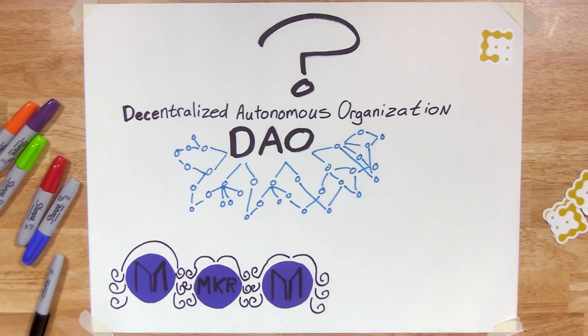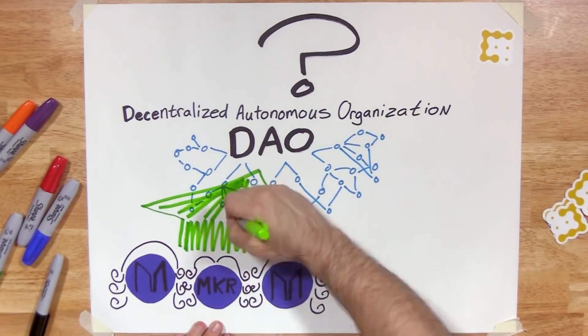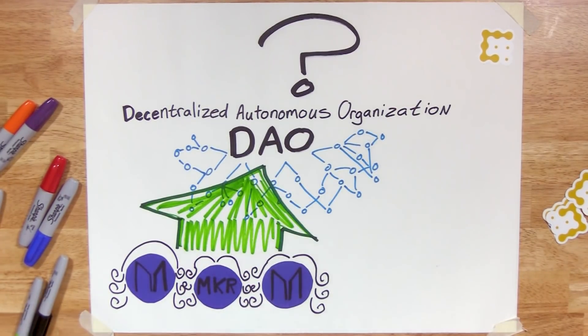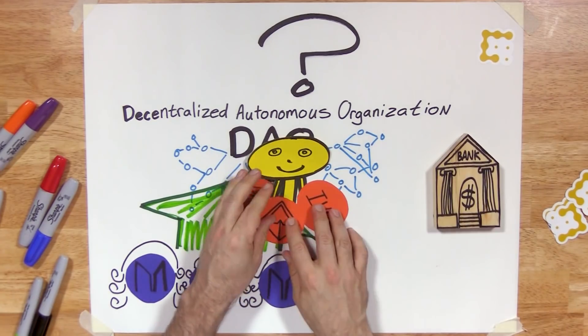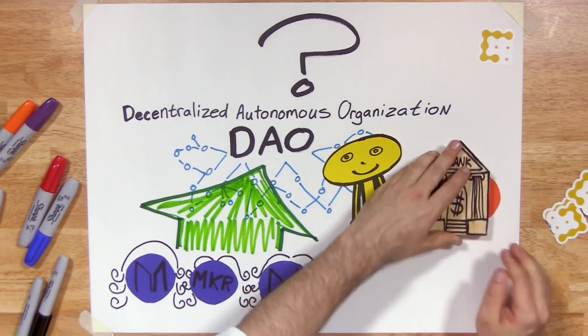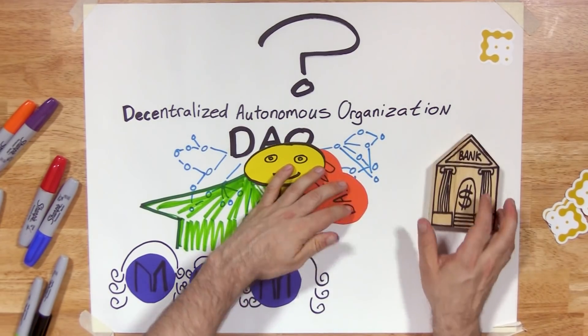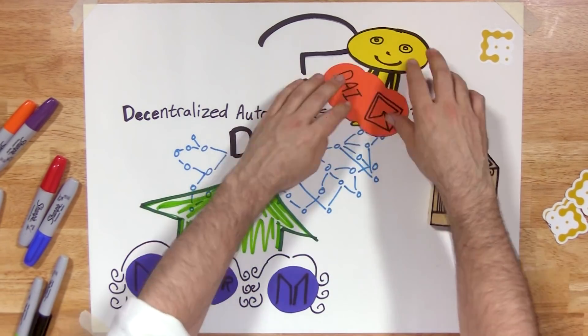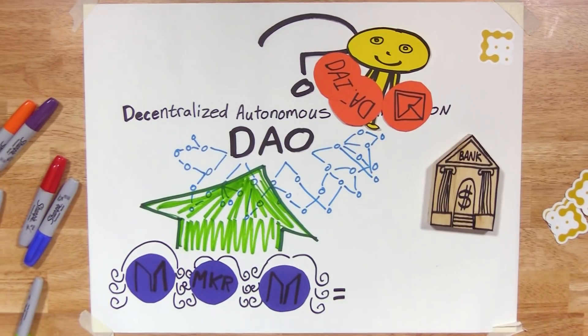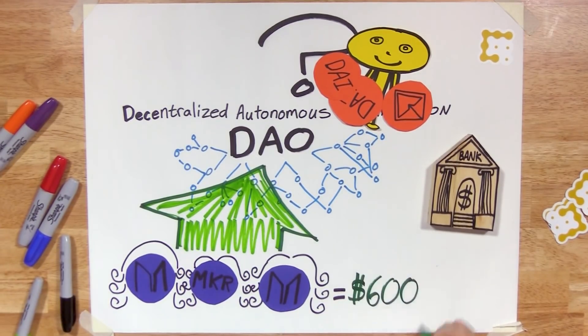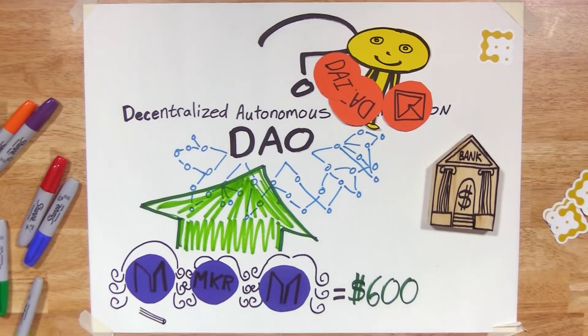Because of this and the possibility of appreciation, the MKR token has been attractive to hold. As long as people keep taking out DAI loans and repaying them, the value should go up as MKR tokens get burned and interest is repaid. MKR is currently worth over $600. So far, only about 1,000 MKR tokens have been burned.